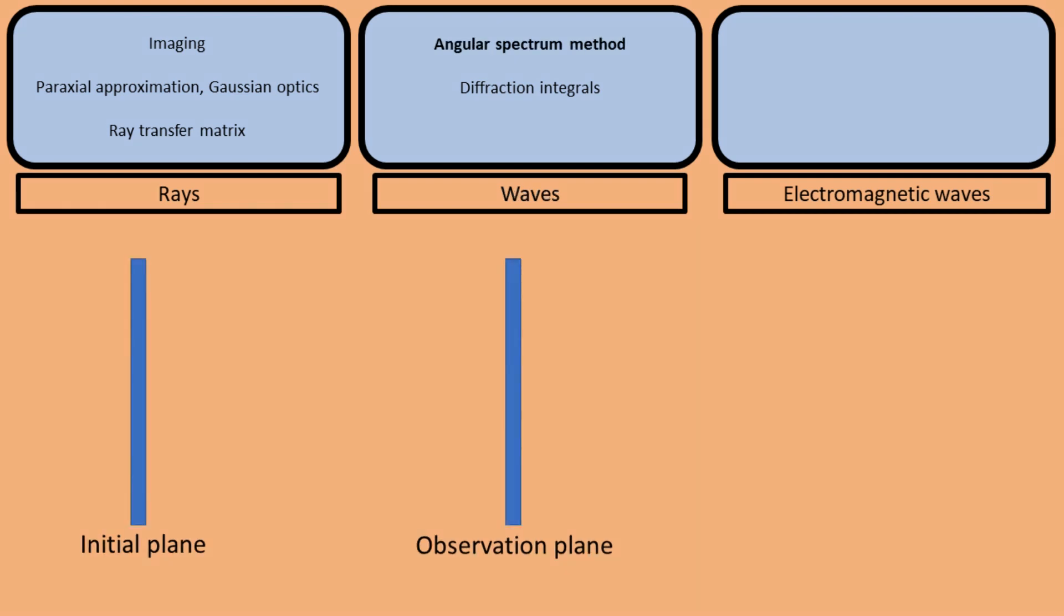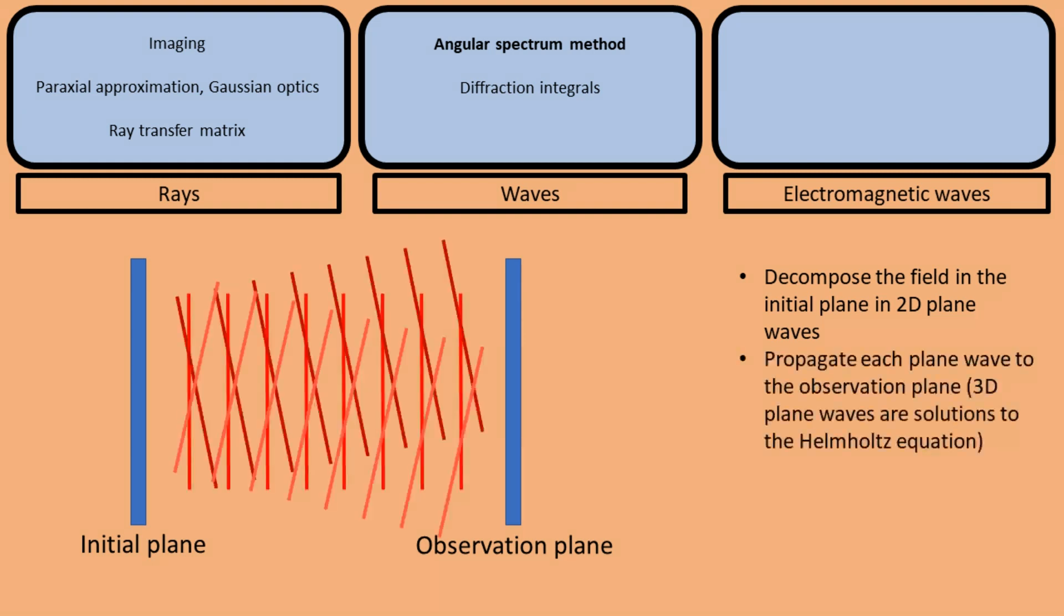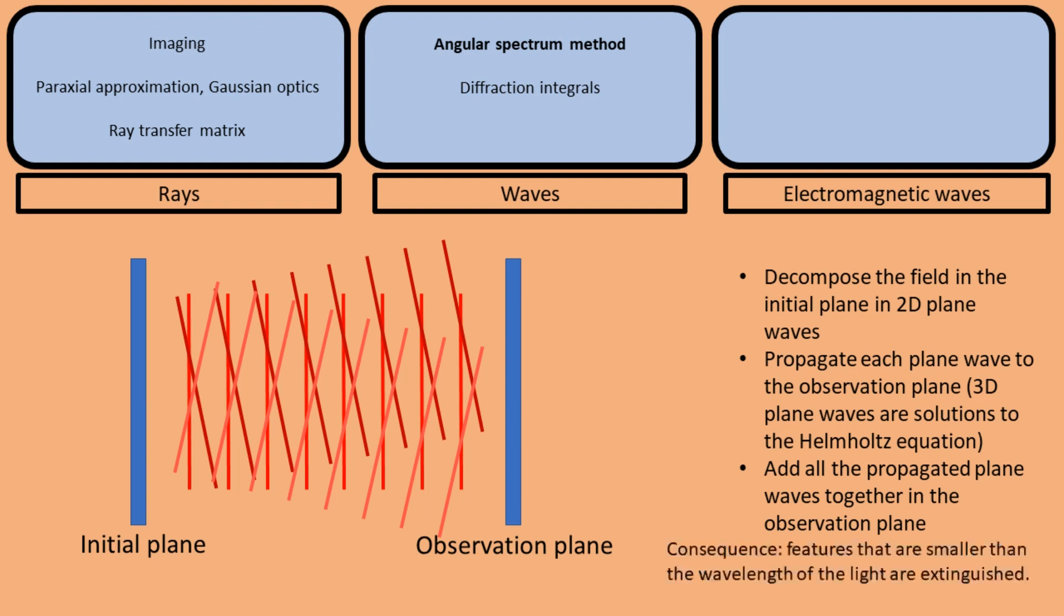In the angular spectrum method, we first decompose the field in the initial plane in 2D plane waves. We know from the Helmholtz equation how each plane wave propagates, so we propagate all the plane waves to the observation plane, and then we add them together to find the propagated field. Using this method, one can demonstrate that when the field propagates, features that are smaller than the wavelength of the light are extinguished. This means that if we illuminate a sample with light of a certain wavelength, and we want to create an image of the sample, the resolution of this image will be limited by the wavelength of the light that we use.